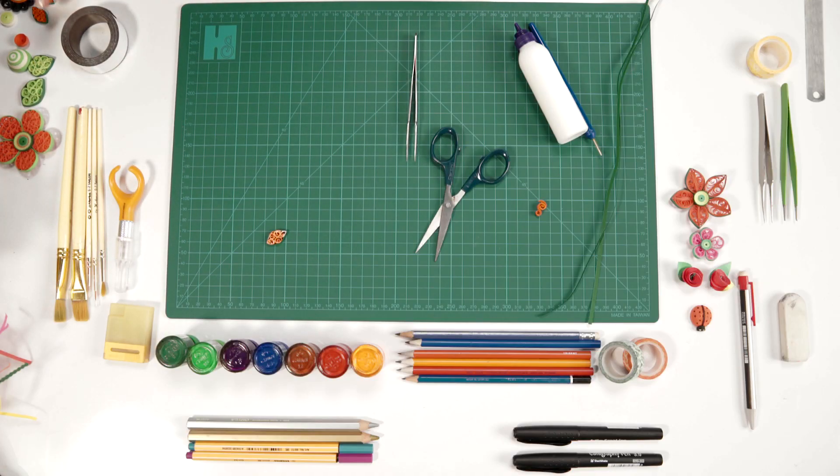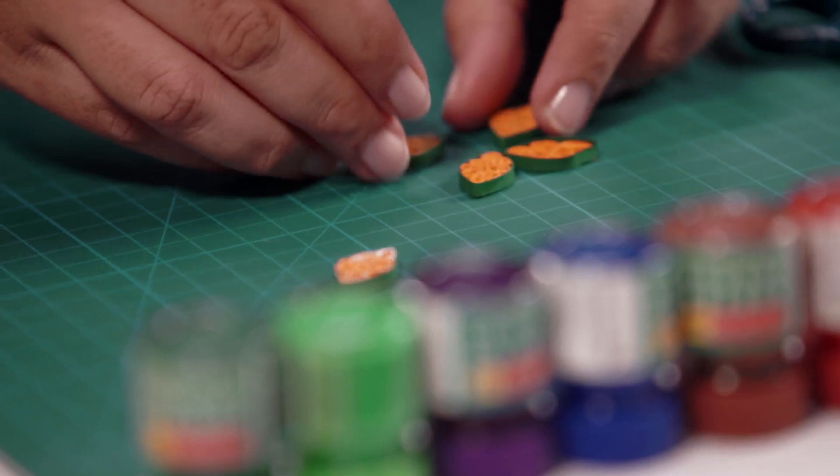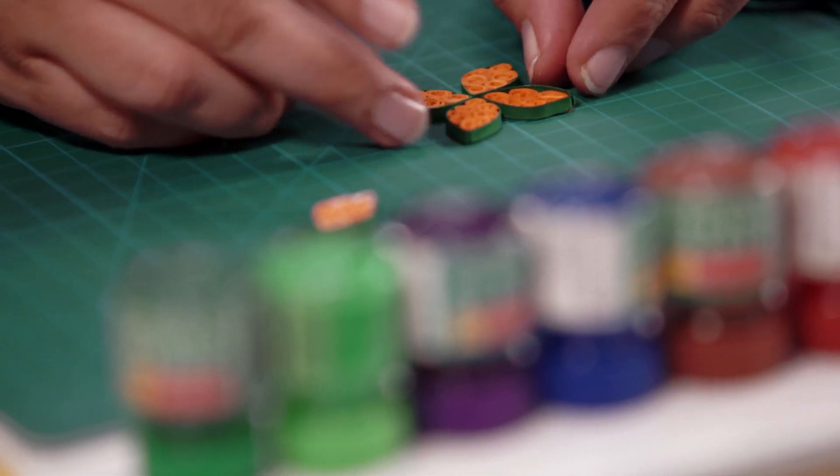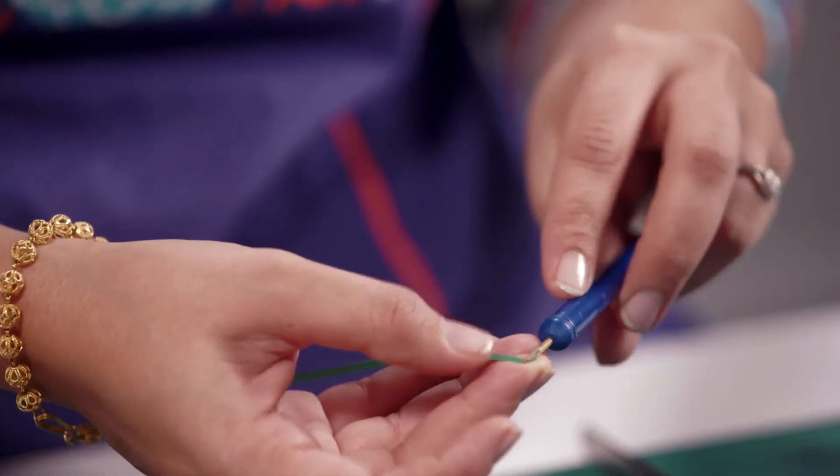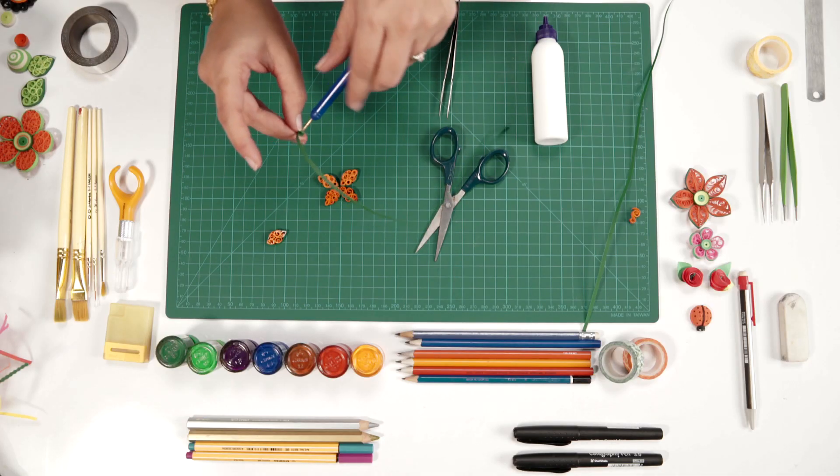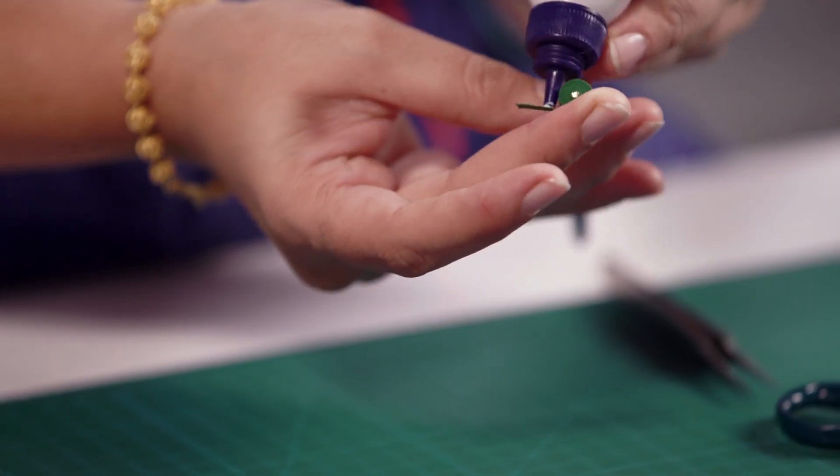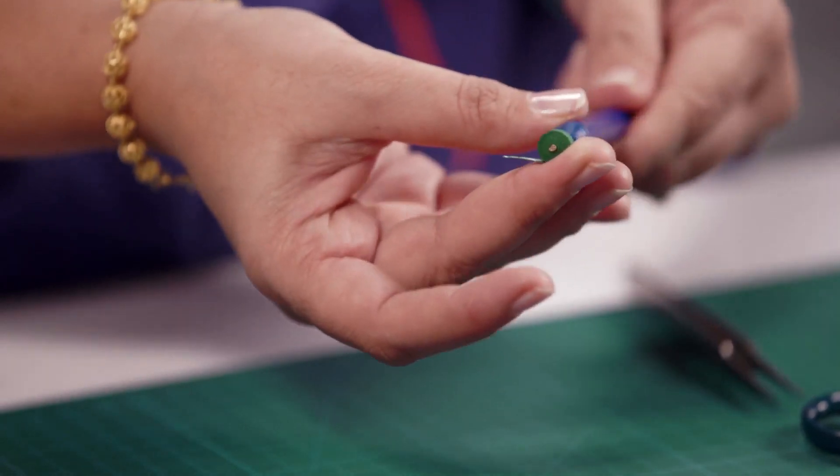Keep it aside to dry. I've already made a few petals and kept them ready, 4 of these. Now we'll make the bud. For that you take a strip of paper and make a tight roll, glue it.